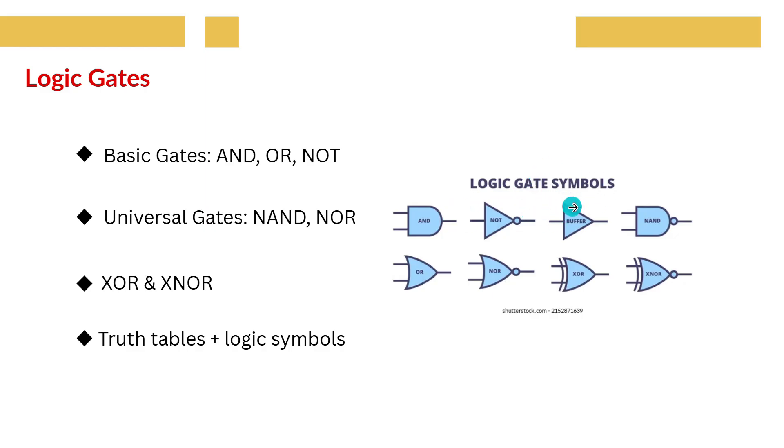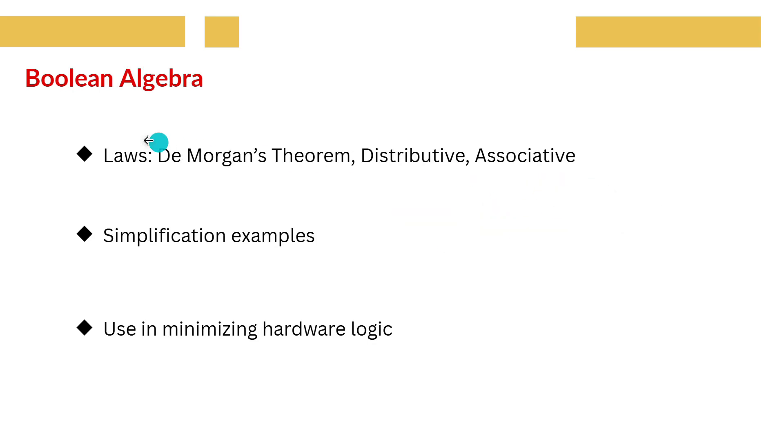Using combinations of these, we can design any digital system. In fact, your processor at the lowest level is just billions of transistors with these gates.